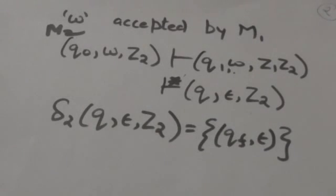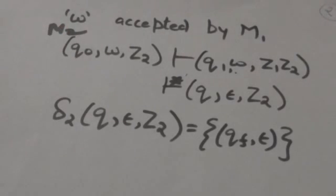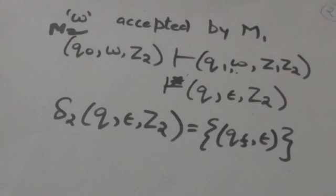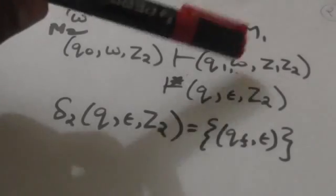Suppose there is a string w which is accepted by pushdown automata M1. What will happen when pushdown automata M2 reads this string w? First, M2 will jump to the initial configuration of M1 from its initial configuration without reading any input symbol. Since string w is accepted by M1, on reading this string M1 empties its stack. Since all transitions of M1 are included in M2, M2 will reach that configuration.